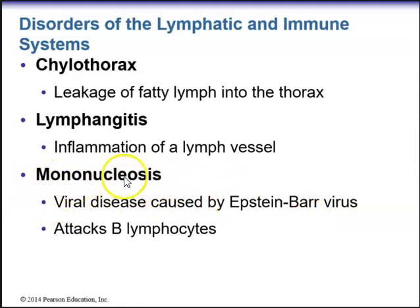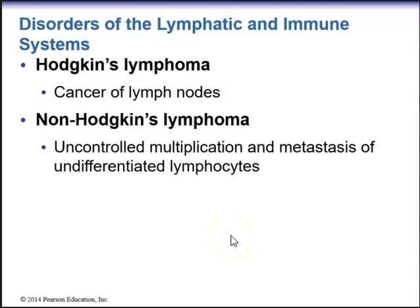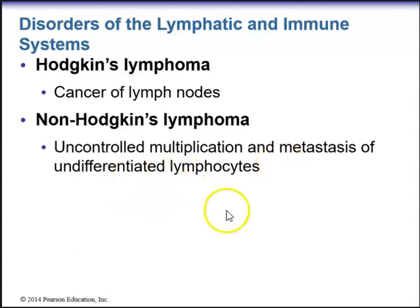Mononucleosis, the kissing disease, is often transmitted to high school students. Other disorders include Hodgkin's lymphoma, a type of cancer of the lymph nodes, and non-Hodgkin's lymphoma, which involves uncontrolled multiplication and metastasis of undifferentiated or immature lymph nodes. These are two types of cancers of the lymph nodes. That concludes Chapter 21 on the lymphatic system and the immune system.